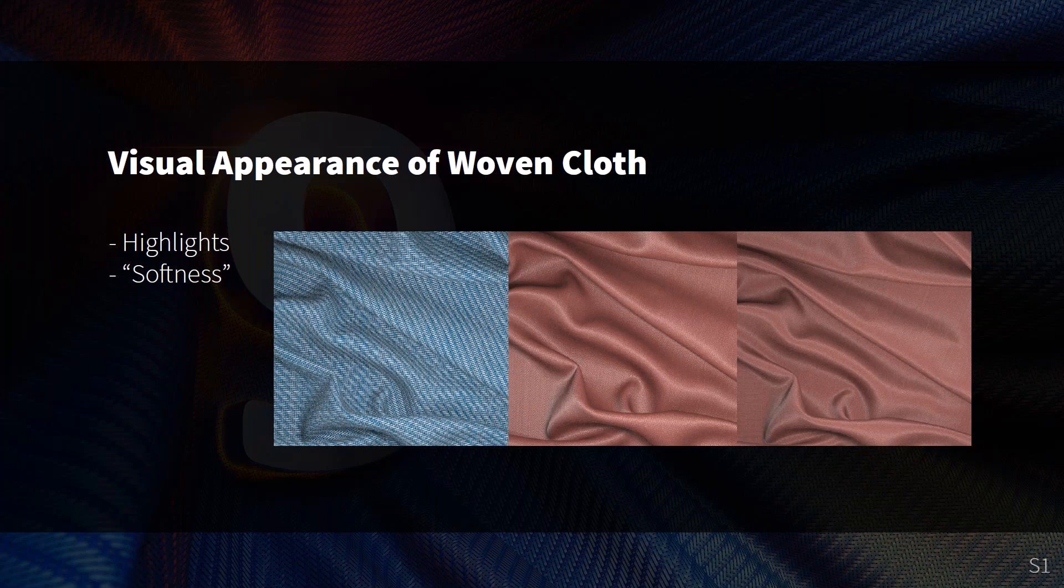Cloth has very anisotropic highlights, and that means they appear very different when viewed or illuminated at different angles. In addition, sometimes cloth can have more than one highlight where most materials only have one. Also, many textiles appear quite soft.